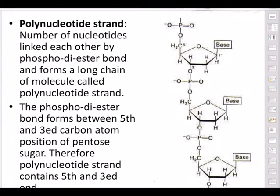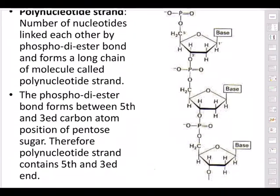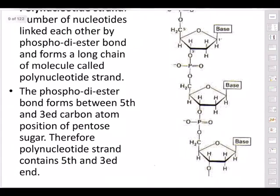In a polynucleotide strand, nitrogenous bases are on the right side and the phosphate group on the left side. Nucleotides are linked to each other by phosphodiester bonds, forming a long chain molecule called a polynucleotide strand. If someone asks what is DNA, the answer is: it is a polynucleotide chain.